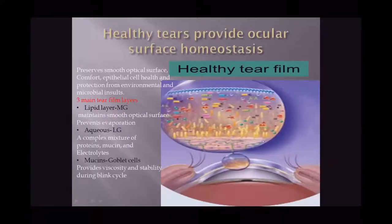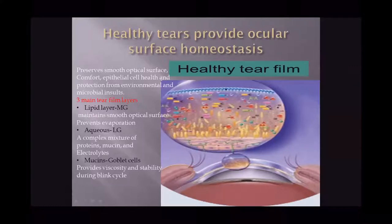A healthy tear film preserves smooth optical surface comfort, epithelial health, and protection from environmental and microbial insults. There are three main tear film layers: the superficial lipid layer, derived from the meibomian gland, maintains a smooth optical surface and prevents evaporation. The aqueous layer, derived from the lacrimal gland, is a complex mixture of proteins, mucins, and electrolytes. The innermost mucin layer, derived from goblet cells, provides viscosity and stability during the blink cycle.